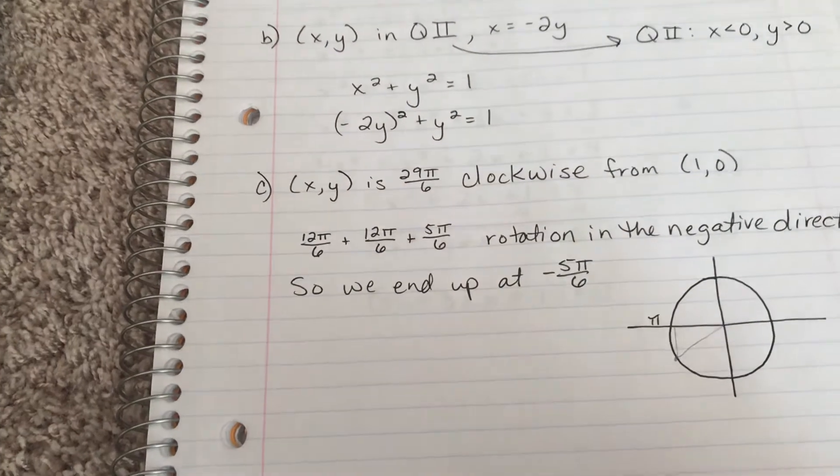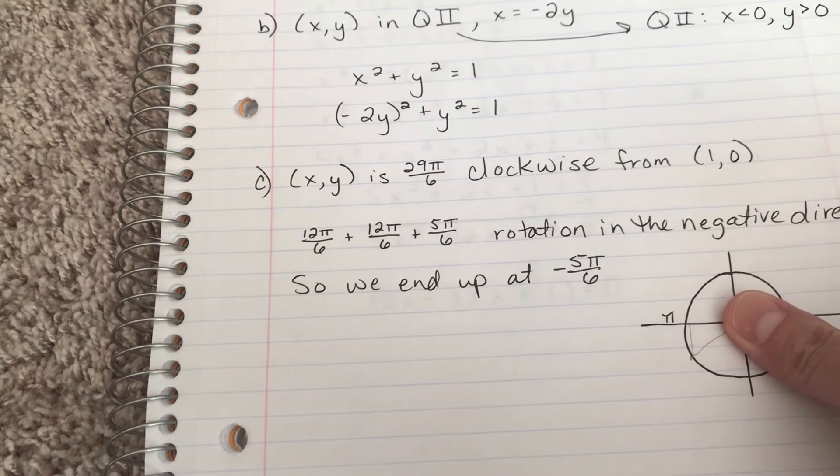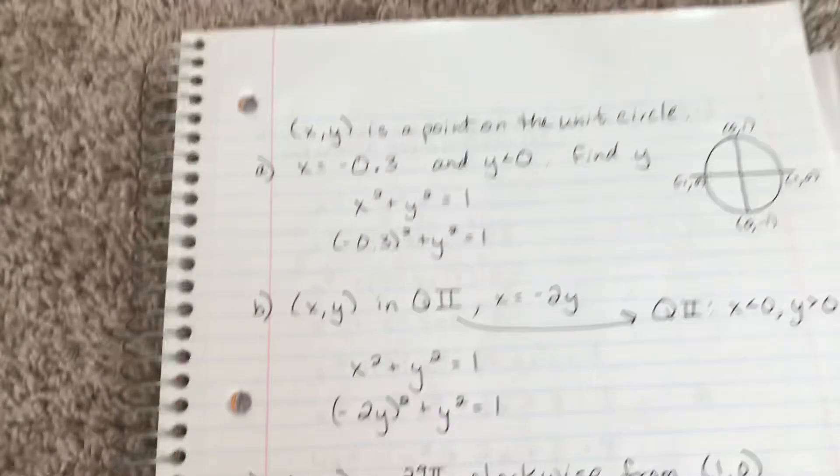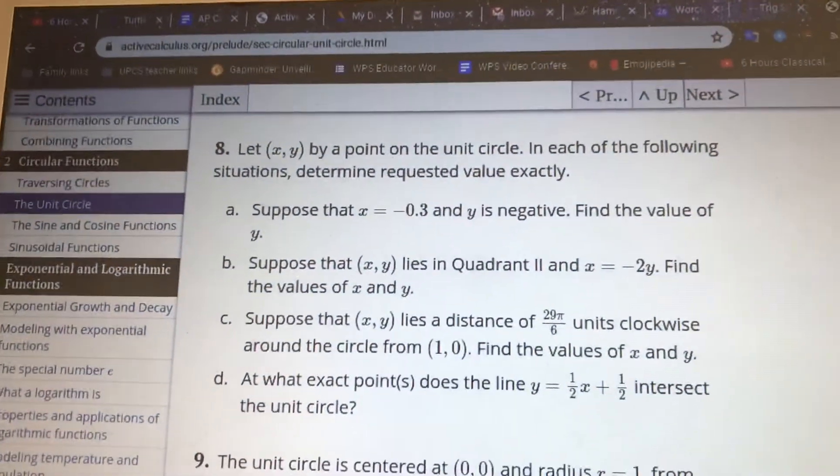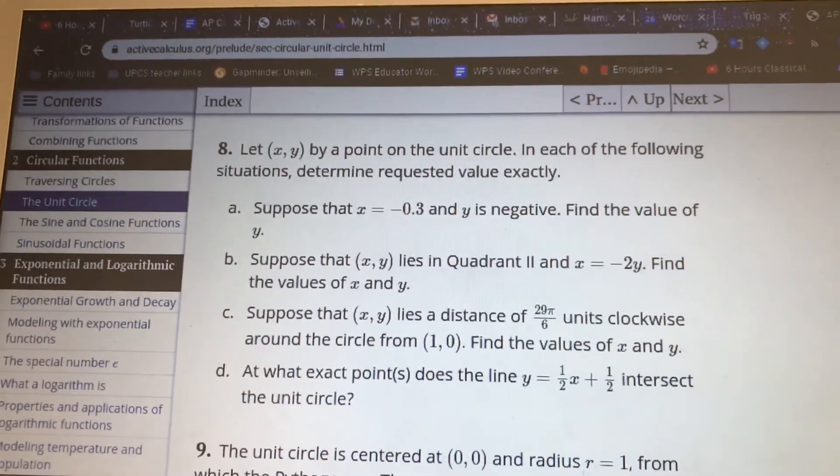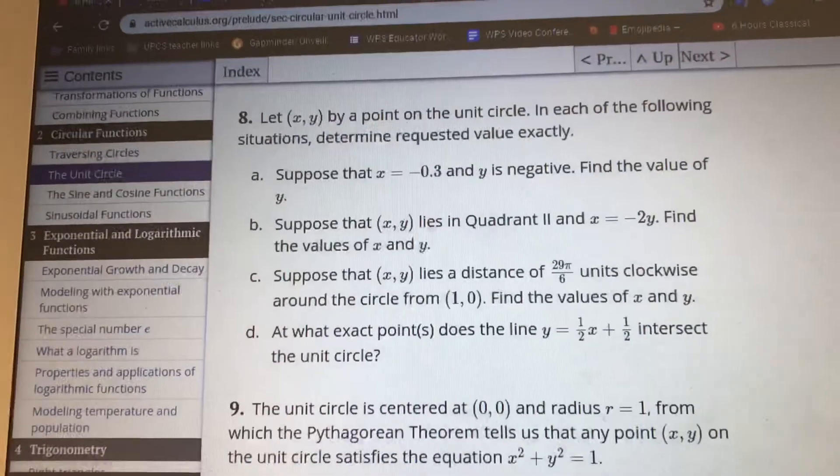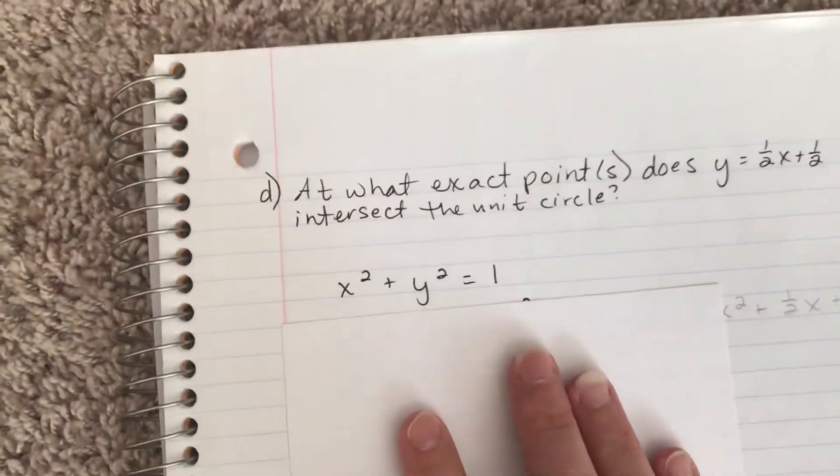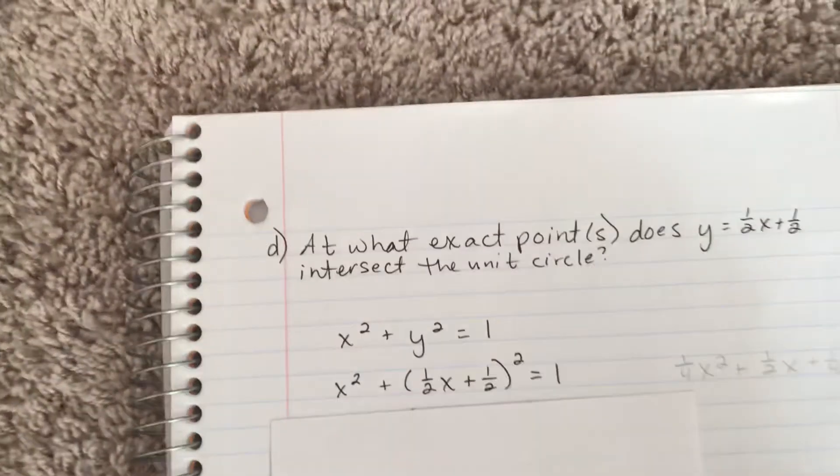All right, the last bit that I want to talk about is part d: at what exact points does a line intersect the unit circle? Part d is going to be just like part b. At what exact points does y = (1/2)x + (1/2) intersect the unit circle? We're going to come right back to our original equation and we're going to just substitute in.